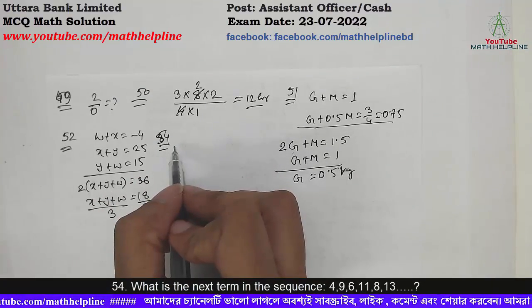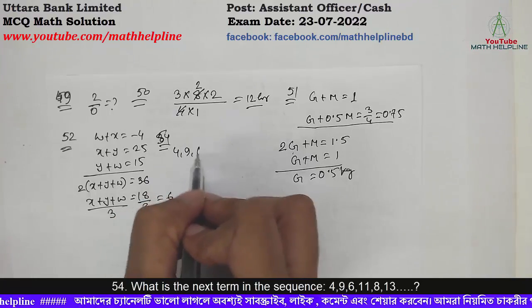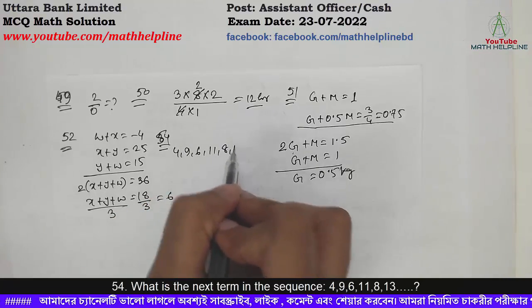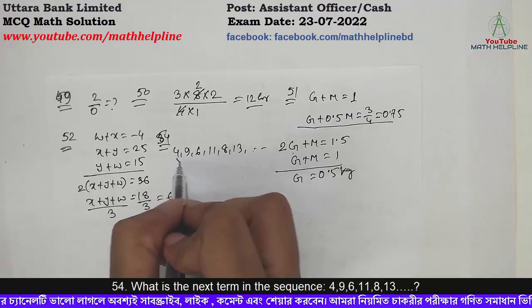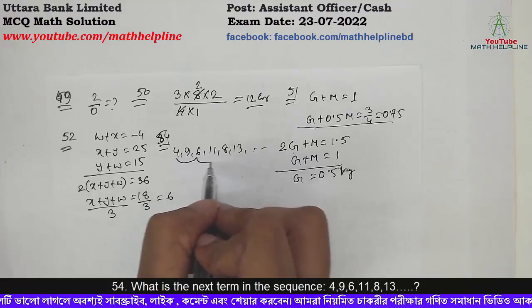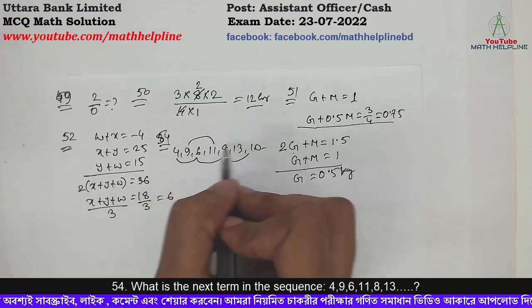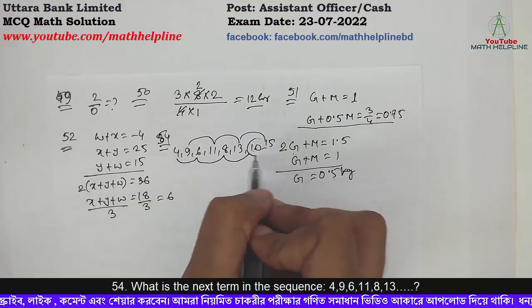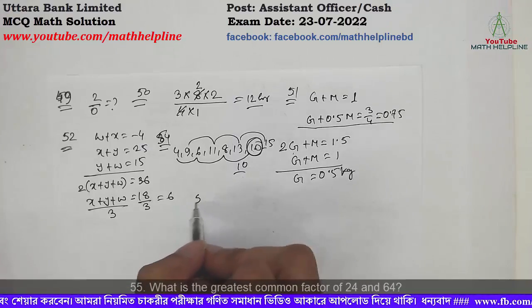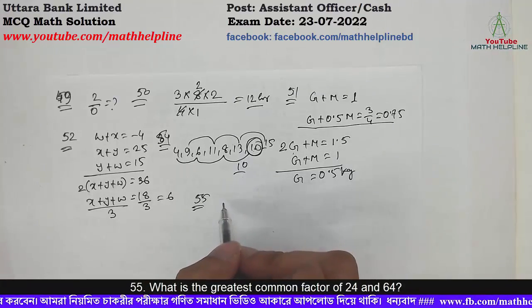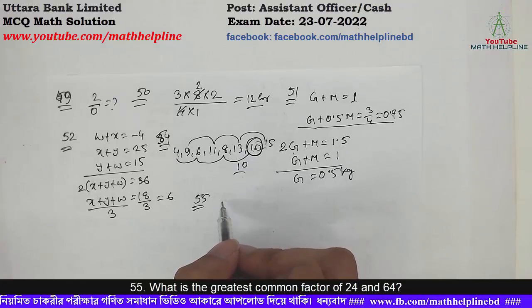Problem number 54: What is the next term in the sequence 4, 9, 6, 11, 8, 13, ...? The sequence has alternating patterns with increasing steps. Continuing the pattern — next number follows the rule. Also: what is the greatest common factor of 24 and 64?